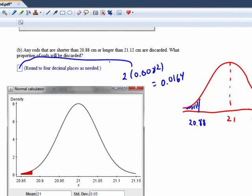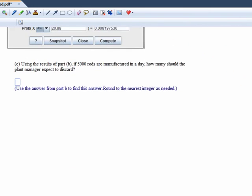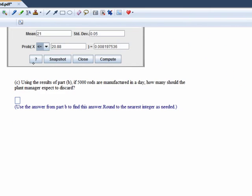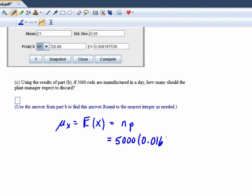And so the expected number of rods to be discarded is going to be - we're going to use the formula for the mean because the mean of a random variable X is the same as its expected value. And here, since it's a binomial, the expected value is n times p. So we have 5,000 rods times 0.0164.